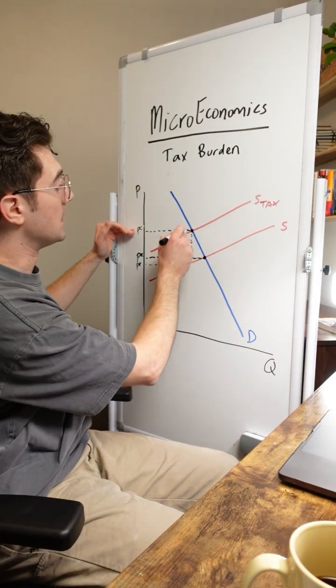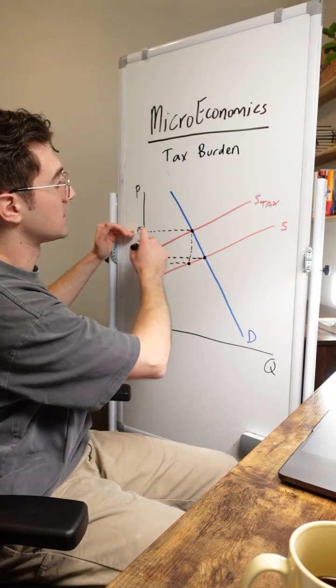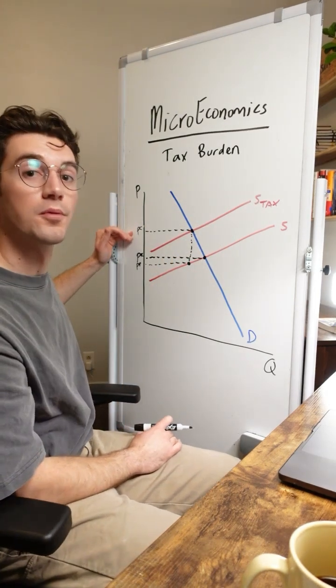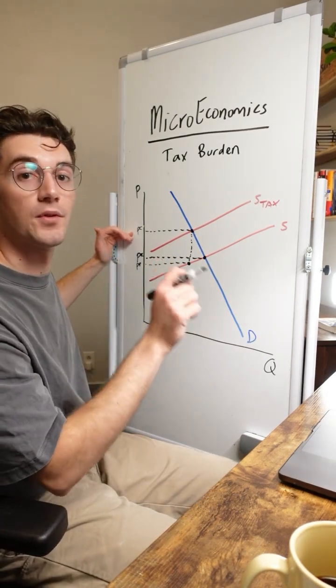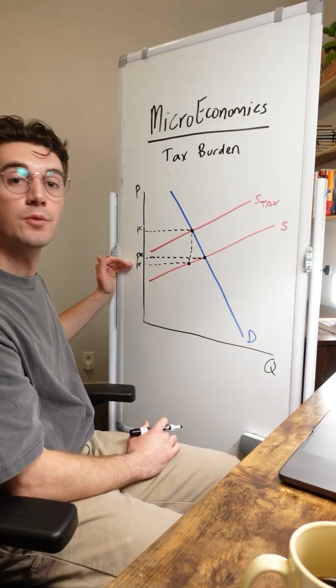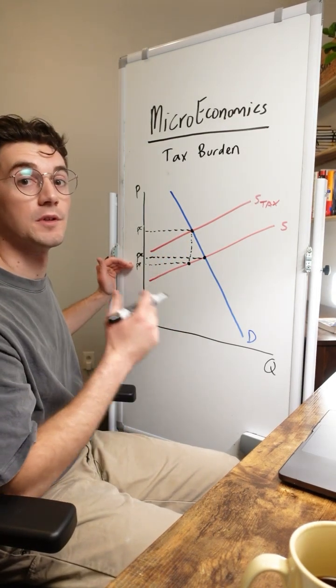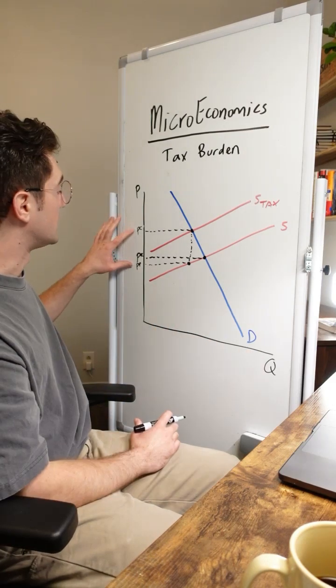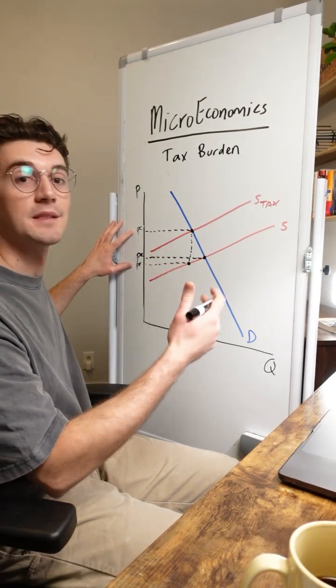Because this right here, this intersection of the demand and supply plus tax curve is the new price that consumers are going to be paying for the good. And when we go down to hit the original supply curve, this is the new price that producers are going to receive from selling the good. The difference here being the tax amount per unit.